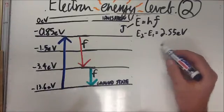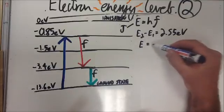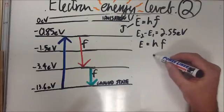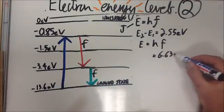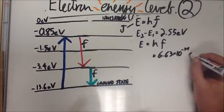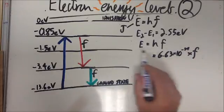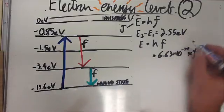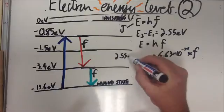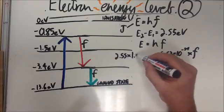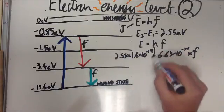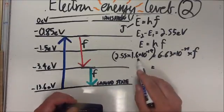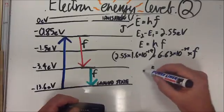So E equals HF, we know that Planck's constant is 6.63 times 10 to the minus 34, and the energy is going to work out as the number of electron volts times the charge on an electron. So that's 2.55 times 1.6 times 10 to the minus 19. Okay? So this number divided by this number should give us the frequency.